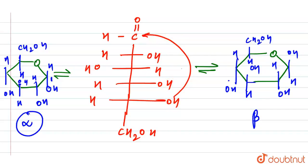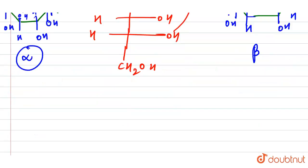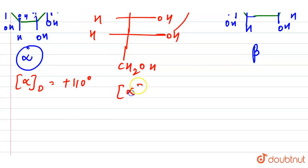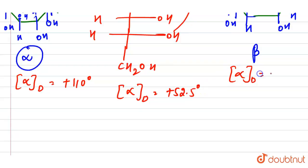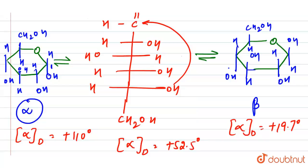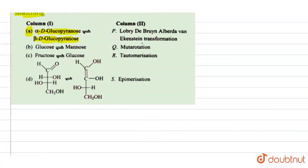This also represents mutarotation — the specific change in optical rotation. For alpha-D-glucose we have +110°, the equilibrium value is +52.5°, and for beta-D-glucose it is +19.7°. Mutarotation is the change in specific rotation to reach the equilibrium value.